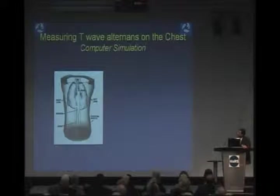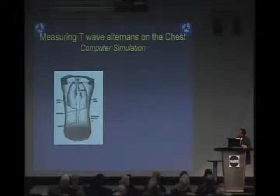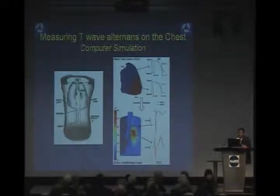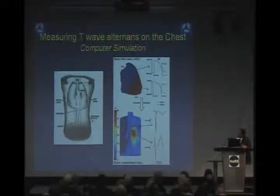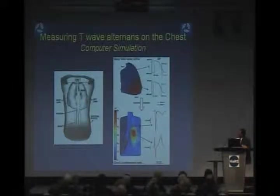We are now using computer simulations to develop this tool. In the simulations, we basically put alternans in the heart and see how it spreads through the lungs and eventually reaches the skin. The top figure shows you the heart and the bottom figure is the front of your chest, with the top part being your neck. In the computer simulation, we put alternans in the bottom of the heart and then saw where it would show up on the chest. Indeed, it does show up right in the middle of the chest.